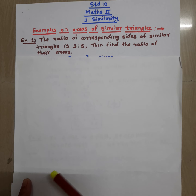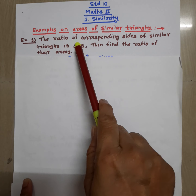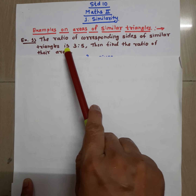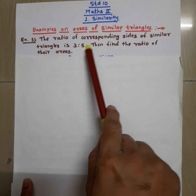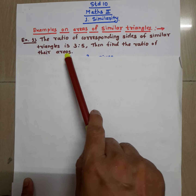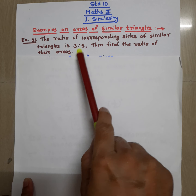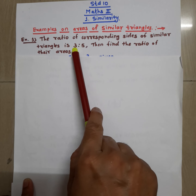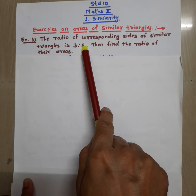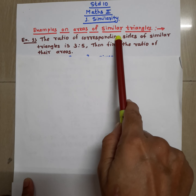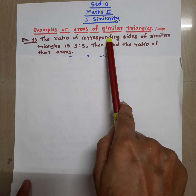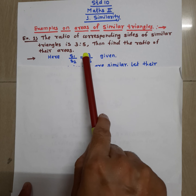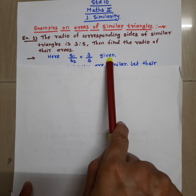Consider the first example. The ratio of corresponding sides of the similar triangles is 3 is to 5. Then find the ratio of their areas. Here the ratio of sides of the similar triangles is given. Let us consider that the sides are S1 and S2, so S1 upon S2 is equal to 3 upon 5, which is given.